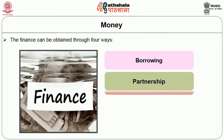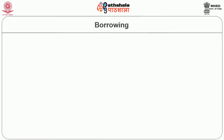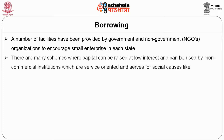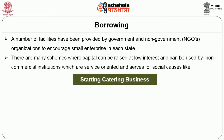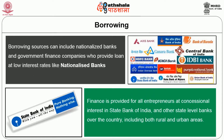Finance can be obtained through four ways: borrowing, partnership, hire purchase, and savings. Regarding borrowing, a number of facilities have been provided by government and non-government organizations to encourage small enterprises in each state. There are many schemes where capital can be raised at low interest and can be used by non-commercial institutions which are service-oriented and serve social causes, like starting a catering business for handicapped women, widows, and other industries. Borrowing sources can include nationalized banks and government finance companies that provide loans at low interest rates.